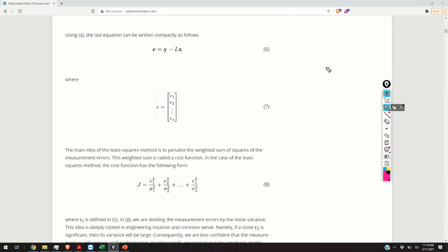The main idea of the least squares method is to penalize the weighted sum of squares of the errors. This weighted sum is called the cost function. In the case of the least squares method, the cost function has the following form that you can see over here. Let us analyze this cost function. This cost function consists of the weighted sum of the terms that look like this. So, we are dividing the error, or actually the square of the error, by the noise variance. And you might naturally ask me the following question. Why do we need to divide the square of the error by the noise variance? Why don't we just take the simple sum of the errors?